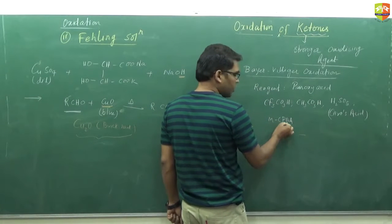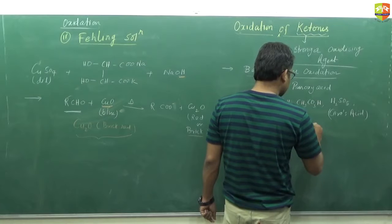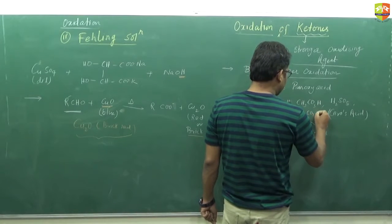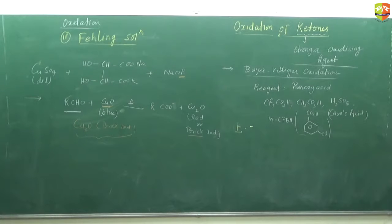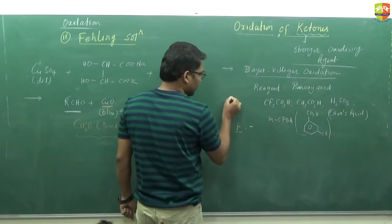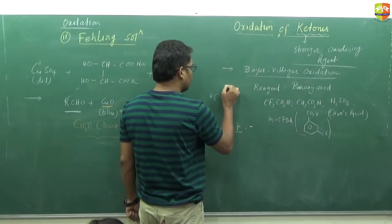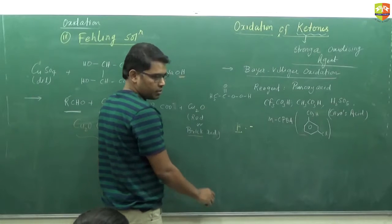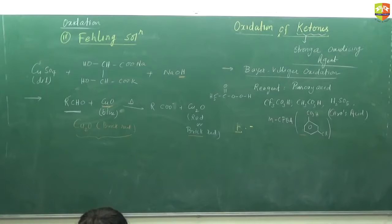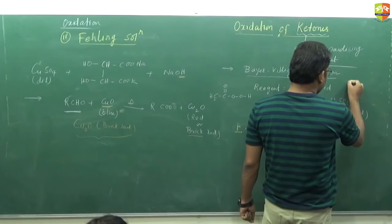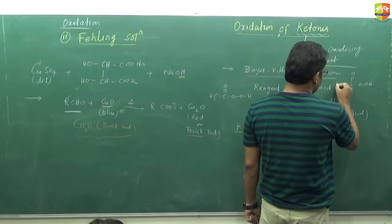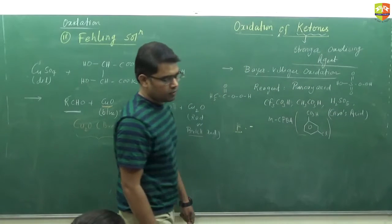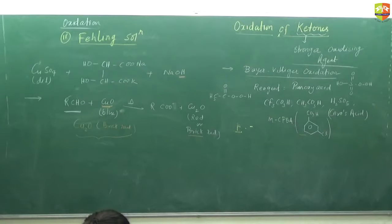We can also use MCPBA - meta-chloro-perbenzoic acid. The structure is at meta position we have chlorine and we have CO3H. This is meta-chloro-perbenzoic acid. We have peroxy linkage into this, like CF3-C double bond O-O-OH. This is H2SO5, you know the structure - S double bond O double bond O with peroxy linkage. You have done it in redox with inorganic chemistry, p-block.